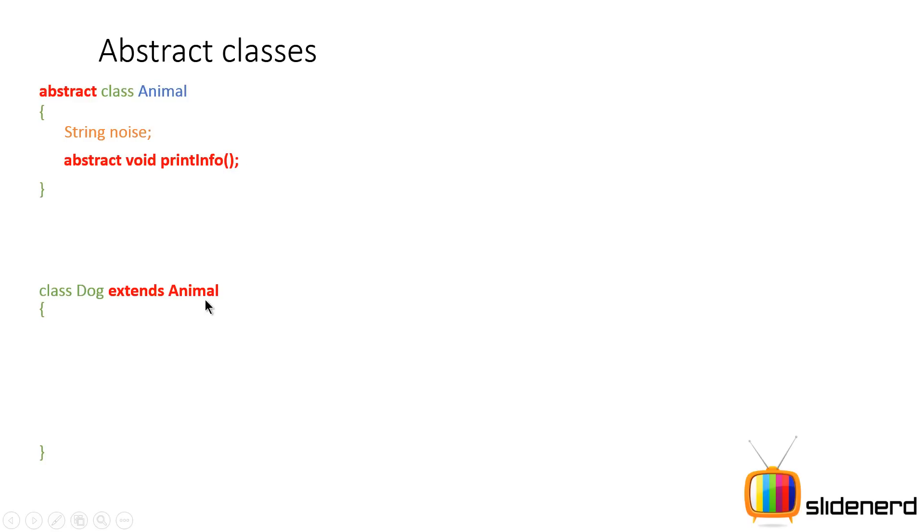Now class Dog extends Animal. Now when a class extends this abstract class, it becomes its responsibility to complete what was incomplete. In other words, printInfo was incomplete in the superclass, the subclass has to make some code for that printInfo method. That's the whole idea behind abstract classes.